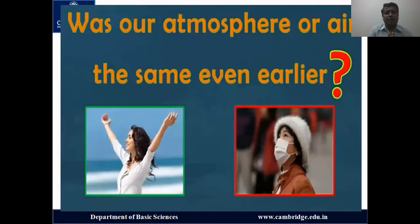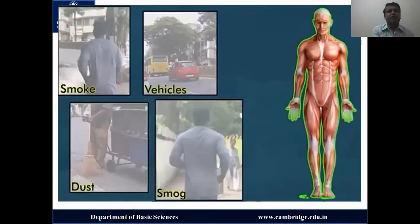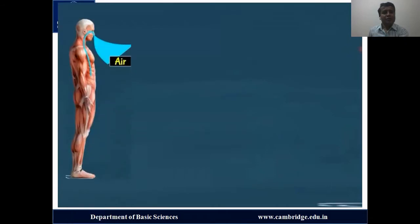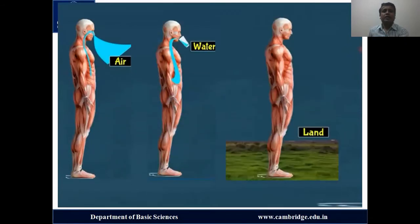Is our atmosphere or air the same as it was earlier? No, it is totally changing due to the faster pace of development. In the name of developmental activities, many things have taken place in the atmosphere — smoke, vehicles, dust, and smog. These things will definitely cause deleterious hazards on human health. The air we breathe, the water we drink, and the land we live on are all getting polluted. Mankind, running behind comforts in the name of development, has created maximum air pollution.